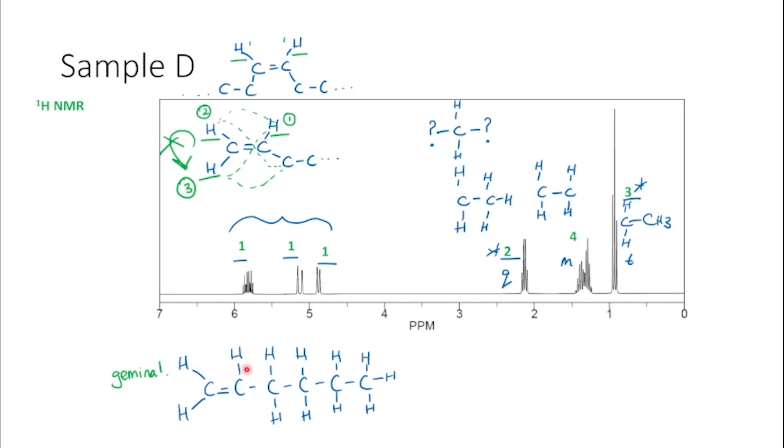So then if we look at this proton here, we can see that it's next to one, two, three, four hydrogens. So technically it should be split into a quintet. But because these two hydrogens are in the same carbon, it gets a little bit more complicated. If we just look at these two hydrogens here, we could say it will be split into a triplet.